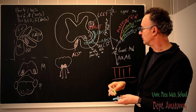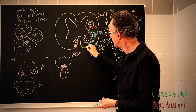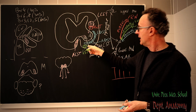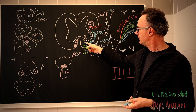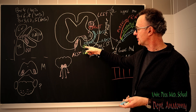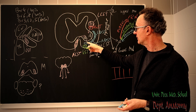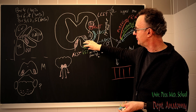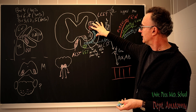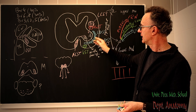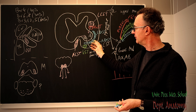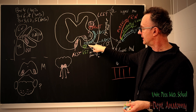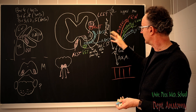The vestibulospinal tract descends in the anterior funiculus. It is an uncrossed pathway, like the anterior reticulospinal tract, and similarly activates the extensors and inhibits the flexors. So we can describe a lateral descending system and an anterior descending system: the rubrospinal tract and lateral reticulospinal tract are crossed pathways activating flexor muscles, while the anterior reticulospinal tract and vestibulospinal tract are uncrossed pathways in the anterior funiculus activating extensors.